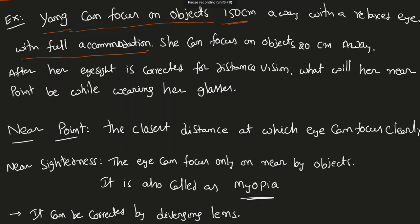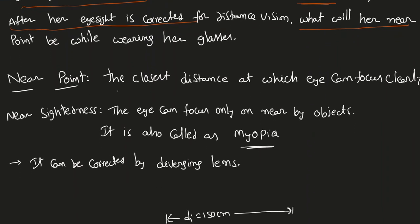With full accommodation — that means if she started using glasses — she can focus on objects which are 20 cm away after her eyesight is corrected for distance vision. So after starting to use glasses, she can see things which are 20 cm away. What will her near point be while wearing her glasses? The near point is the closest distance at which the eye can focus clearly.